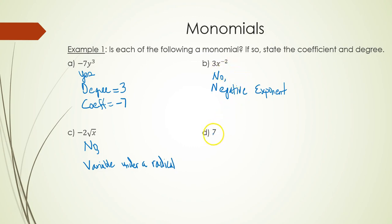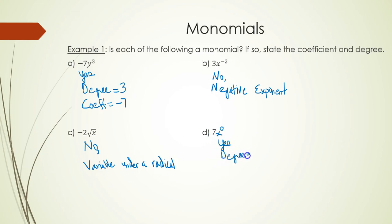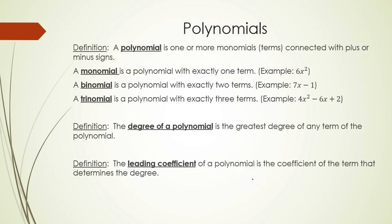In part d, I just have the number seven. Think of this as seven times a variable to the zero power, which is seven times one, still equal to seven. The power on the variable is zero, which is a whole number and is allowed. So the answer is yes, the degree is zero, and the coefficient is seven.